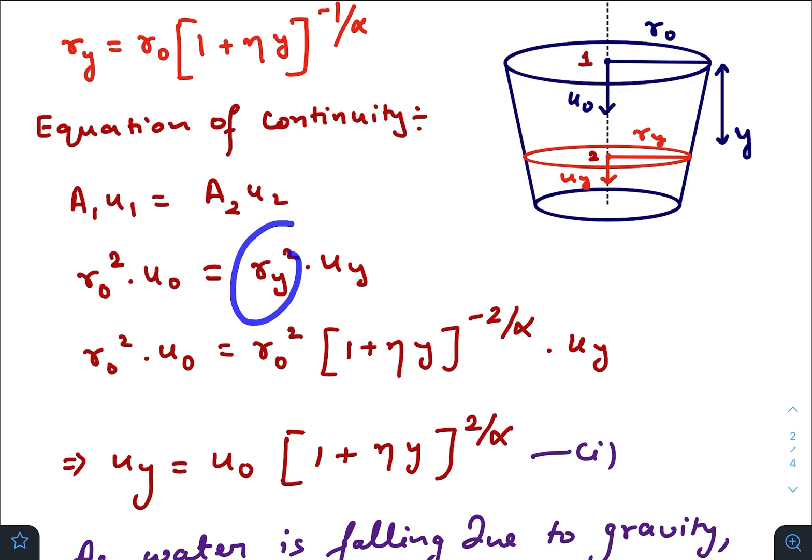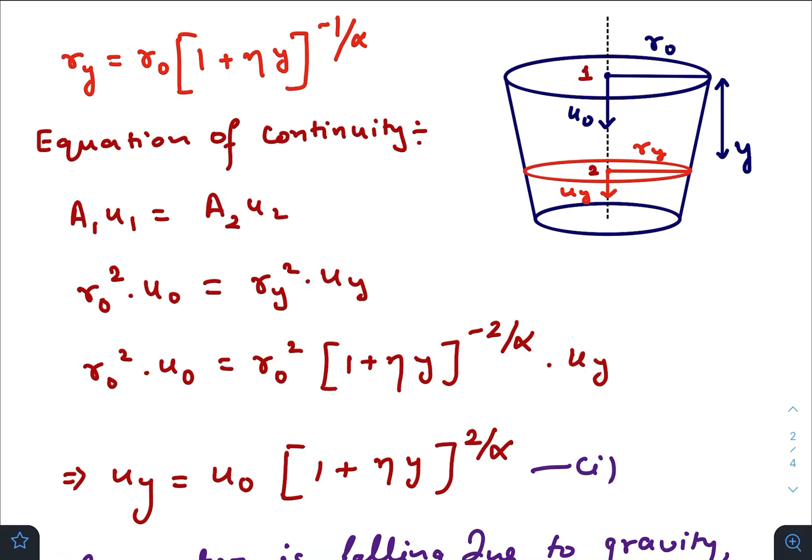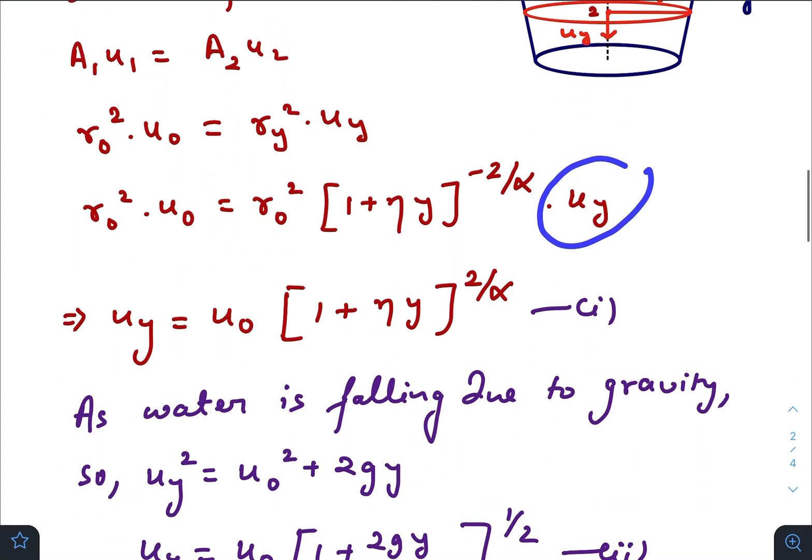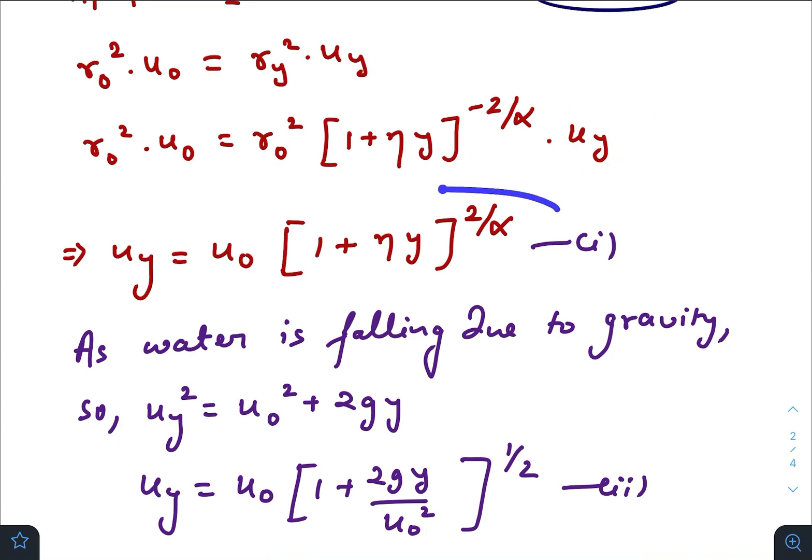We will just put the value of r_y from the given equation. So we got the expression of u_y, something like this: r naught square r naught square gets cancelled out.